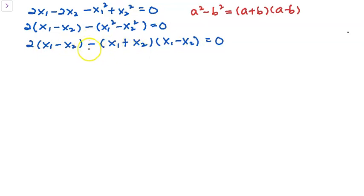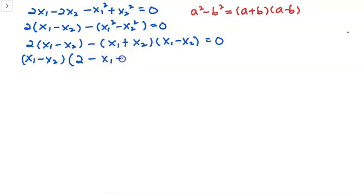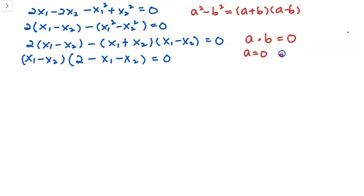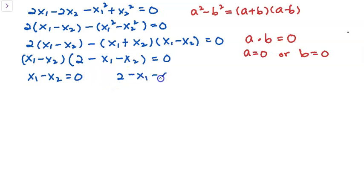Looking at the two terms, I have the common factor (x1 minus x2). After factoring it out, I get (x1 minus x2) multiplied by (2 minus x1 minus x2) equals 0. Using the concept that if a times b equals 0 then either a equals 0 or b equals 0, I get either x1 minus x2 equals 0, or 2 minus x1 minus x2 equals 0.